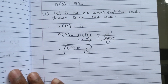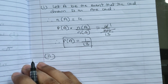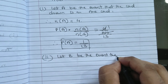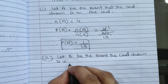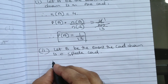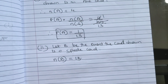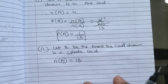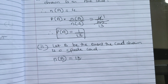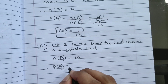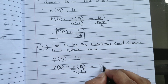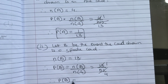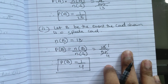Second: probability that the card is a spade card. Let B be the event that the card drawn is a spade card. Total spade cards = 13. (Total diamond cards = 13, total heart cards = 13, total club cards = 13.) Number of elements in B is 13. Probability of B = 13/52 = 1/4. Therefore probability of B is 1/4.